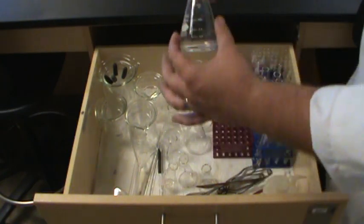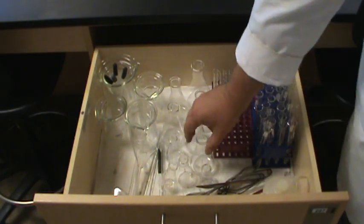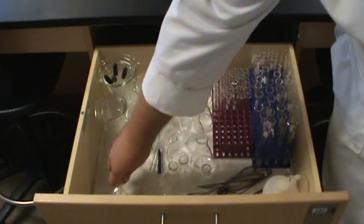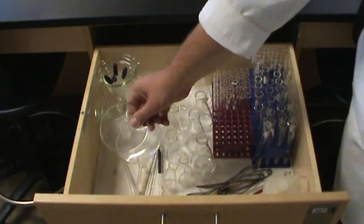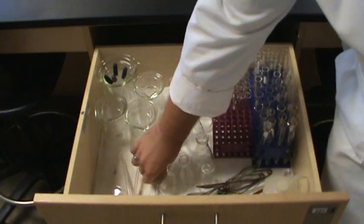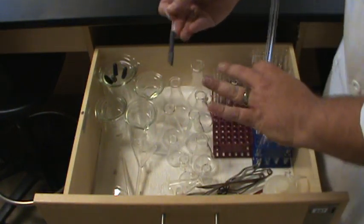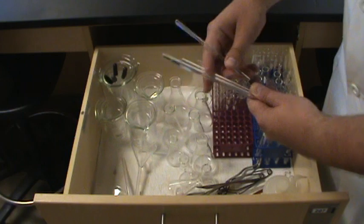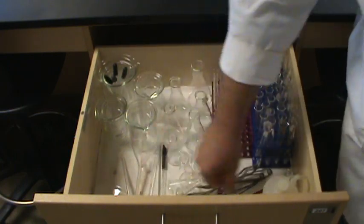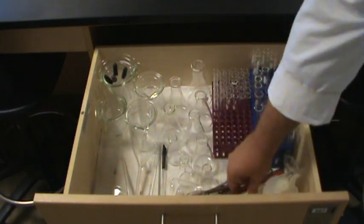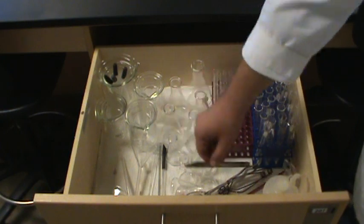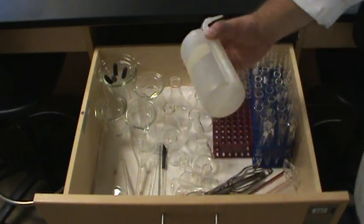Erlenmeyer flasks, those are the cone-shaped flasks, a couple of funnels that'll help us out, some watch glasses, stir rods and a rubber policeman that works like a little spatula for getting solids out, a couple of graduated cylinders, some other spatulas, and a water bottle.